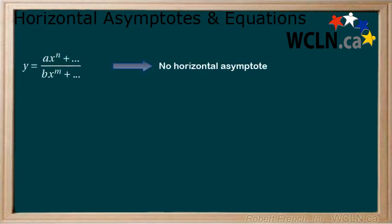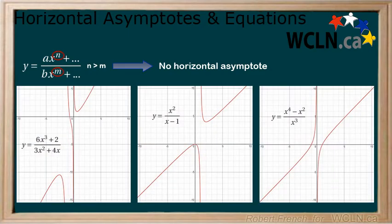There will also be some cases where there is no horizontal asymptote. These cases occur where the highest power in the numerator is greater than the highest power in the denominator. Here are a few different examples. In each example, we can see that the highest power is in the numerator.